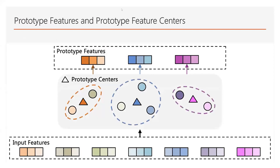To tackle this challenge, we propose a novel multi-task learning model called Prototype Feature Extraction, PFE, as shown in the figure. It learns disentangled features to better model shared information and balances shared information and task-specific experts for multiple tasks. We introduce prototype feature centers to extract prototype features by assigning features to each center. By measuring the distance between each sample's original features and these prototype feature centers, we obtain disentangled prototype features to represent each sample. Each prototype feature is learned from a cluster of similar features, allowing the model to better distinguish task-specific features compared to previous models that simply concatenate original features.